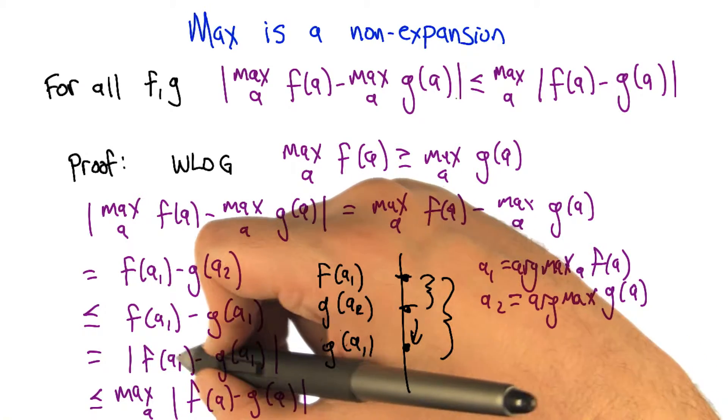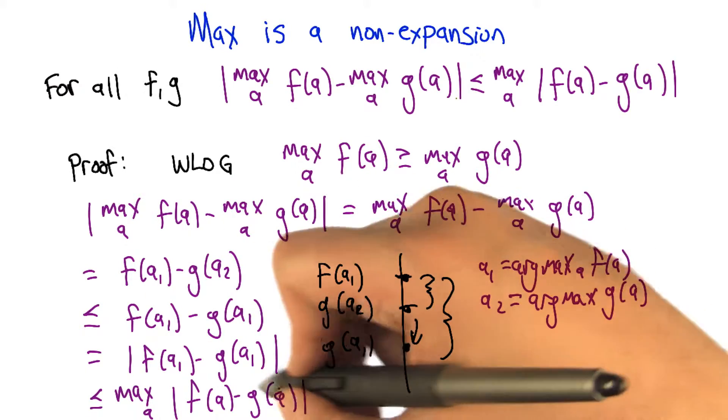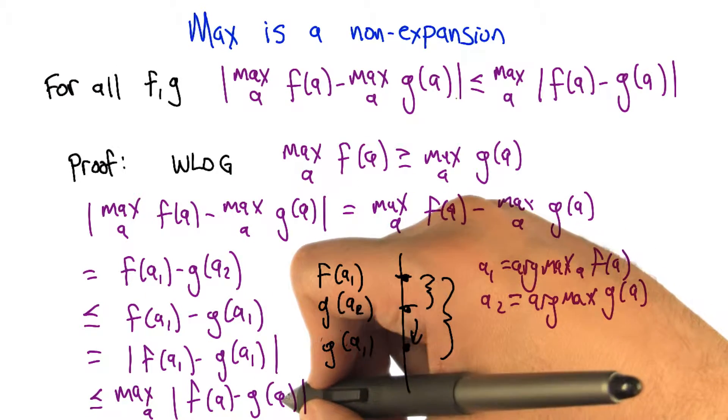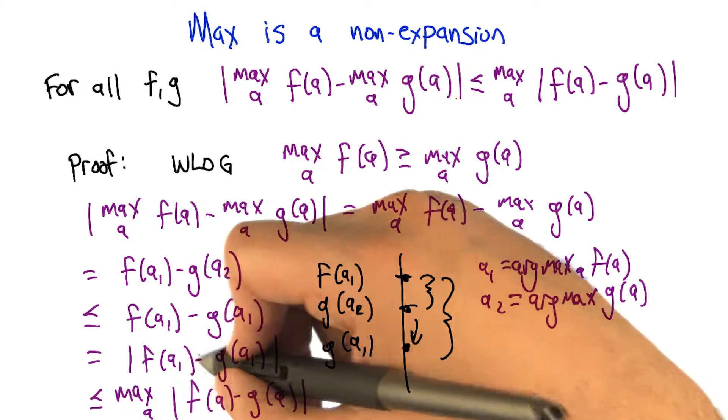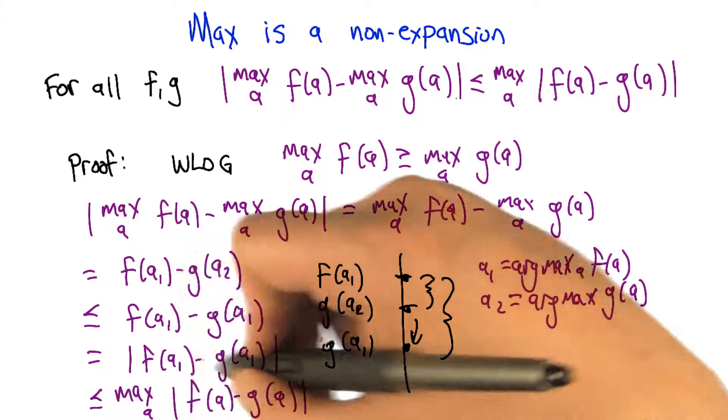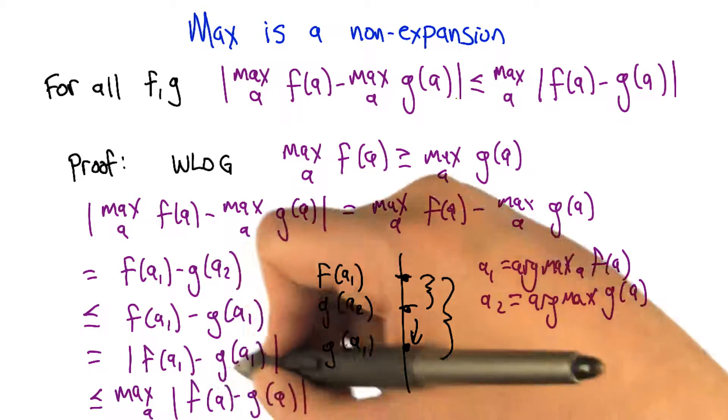So we can definitely achieve at least this value, but it's possible that some other action will let us achieve an even larger value. But by maxing, we can't have it achieve a smaller value. I mean, we could achieve a smaller value, but the max will be at least as big as what we get for A1.